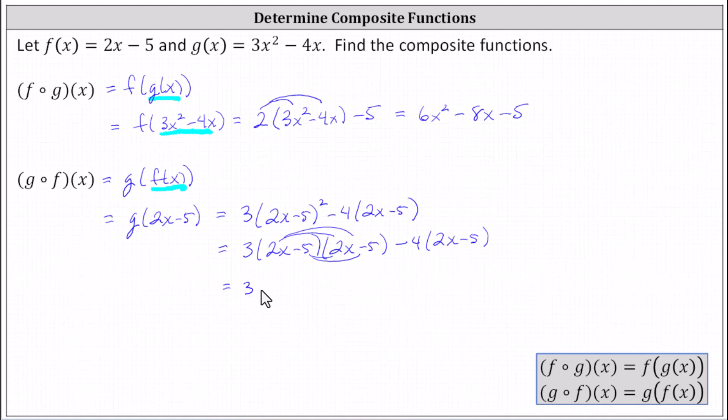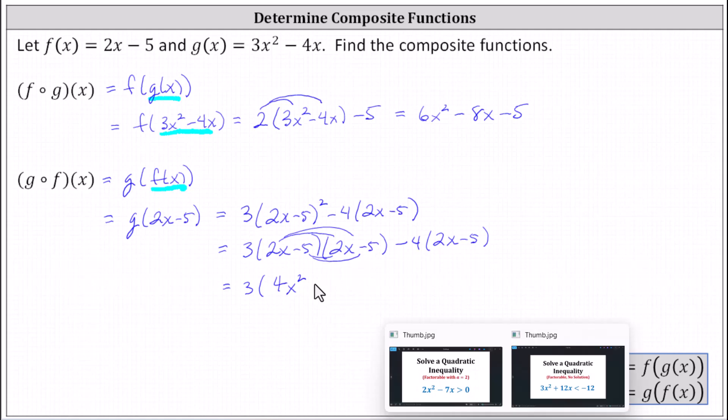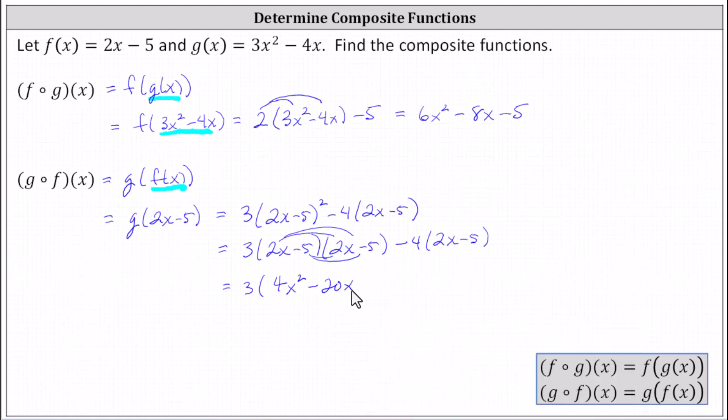So we'll have three times the product. 2x times 2x is 4x squared, and then we have 2x times negative 5, which is negative 10x, and negative 5 times 2x, which is another negative 10x, giving us minus 20x. Then negative 5 times negative 5 is plus 25.